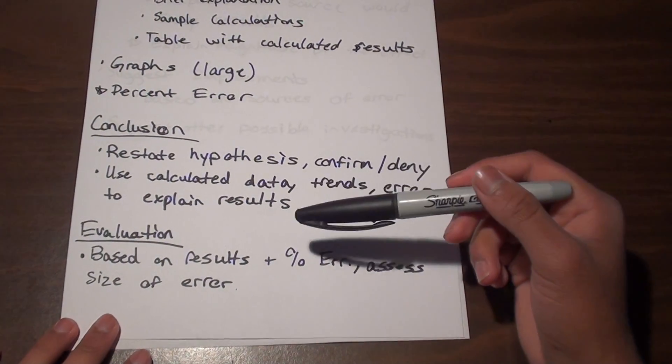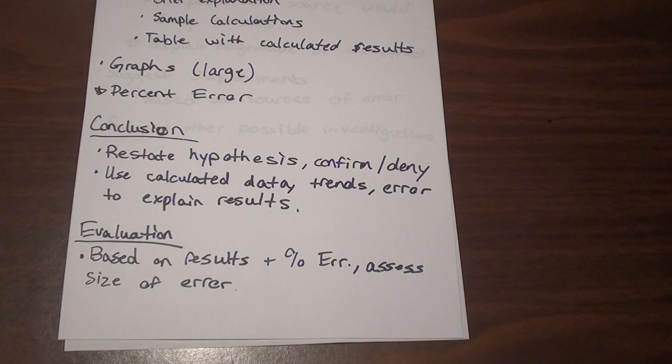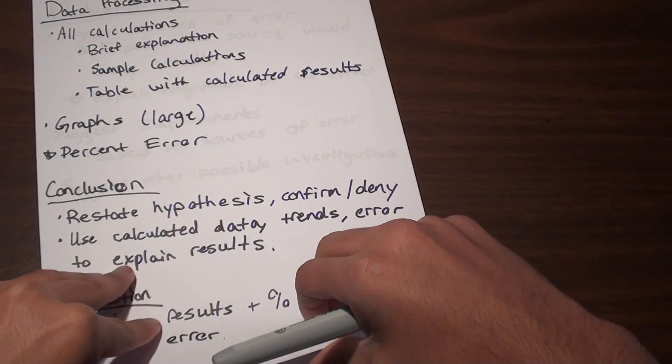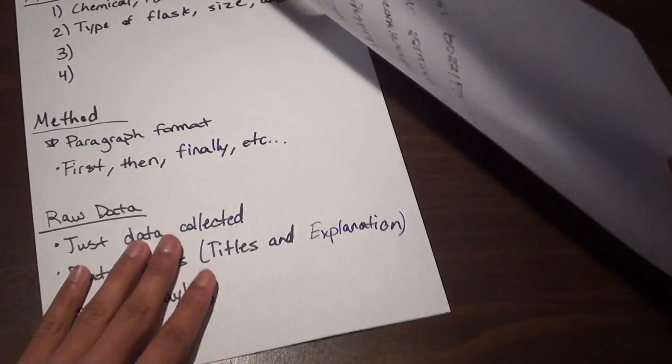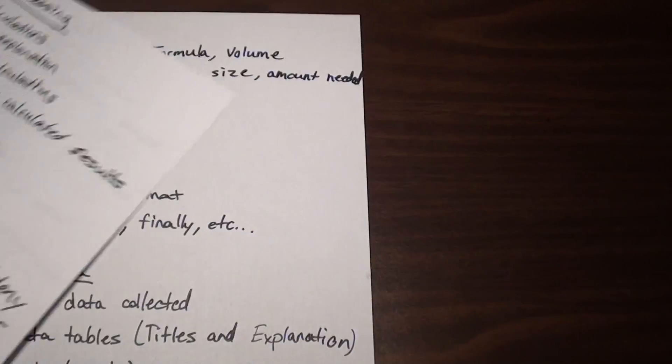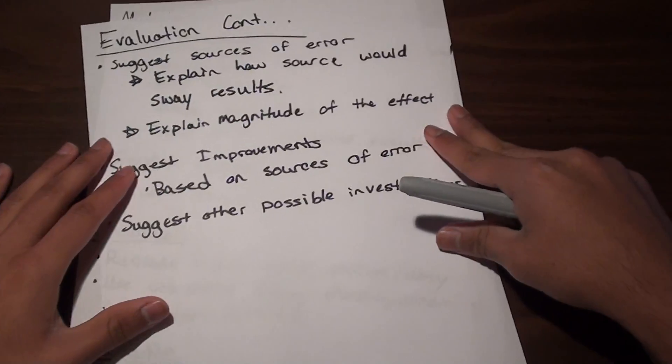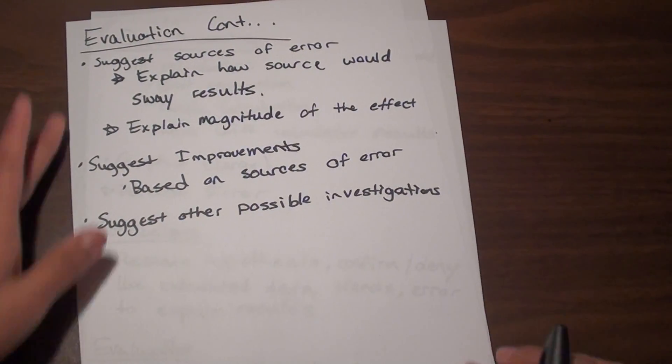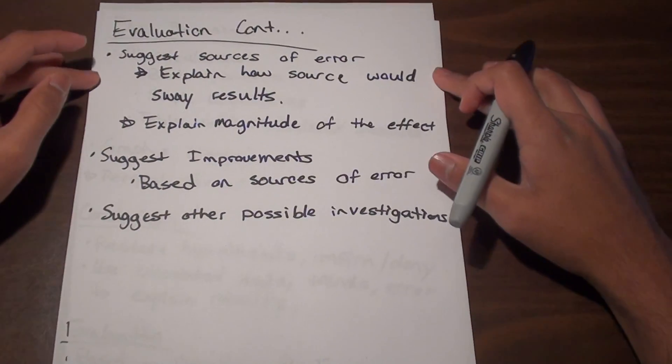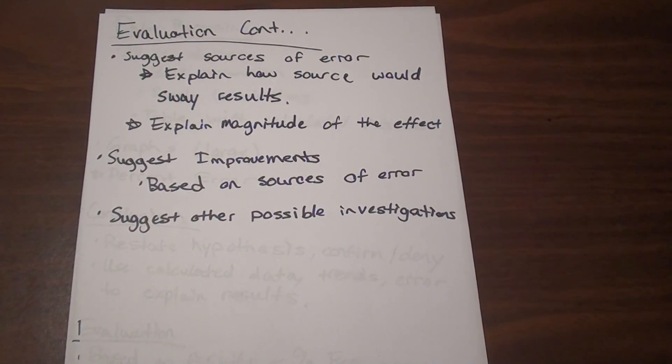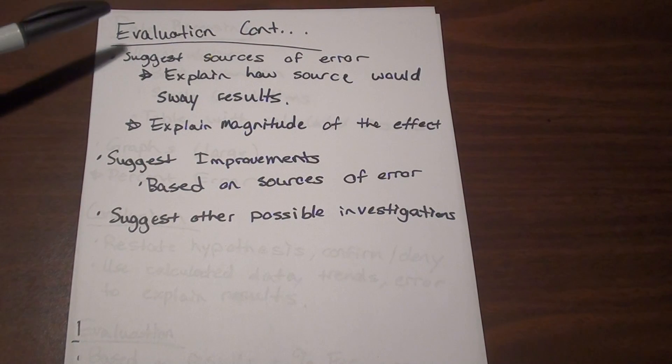And in your evaluation, you're going to basically say, based on the results and the percent error, you're going to be assessing the size of the error and what caused it. Obviously, if your source of error is large, you're going to want to address that and come up with some pretty large source of error to really explain why your percent error was so large. So you're going to suggest a different source of error. And this next part is really crucial.